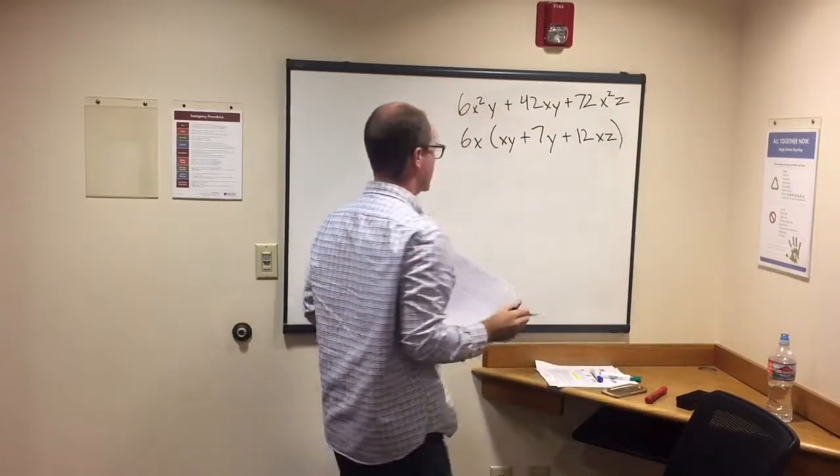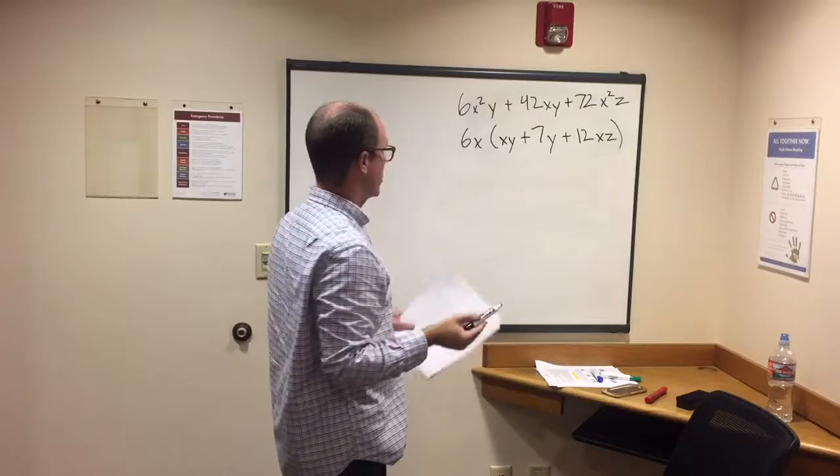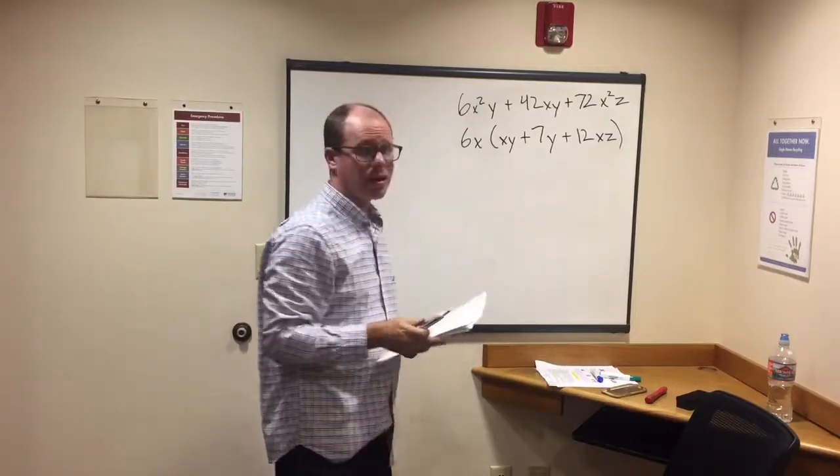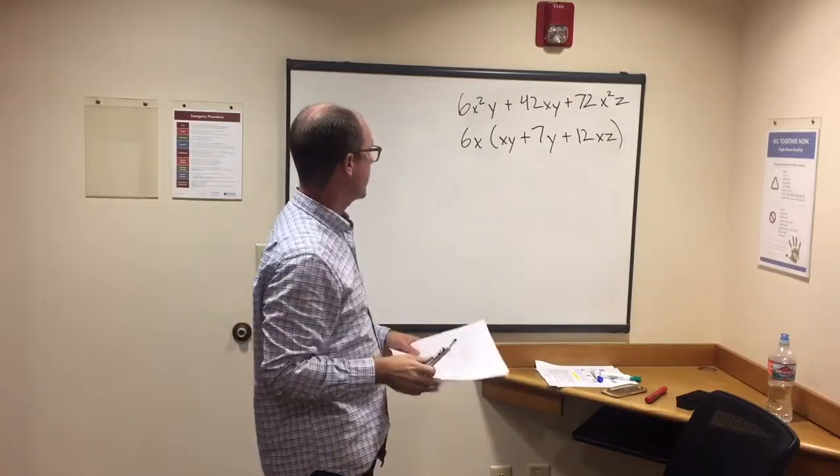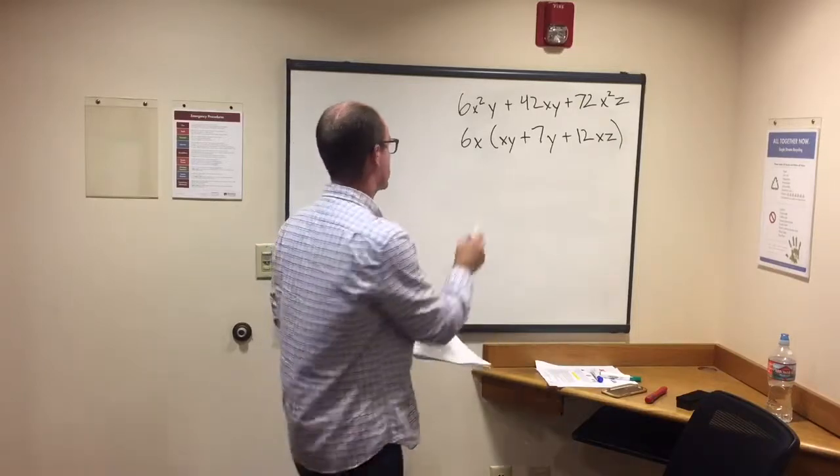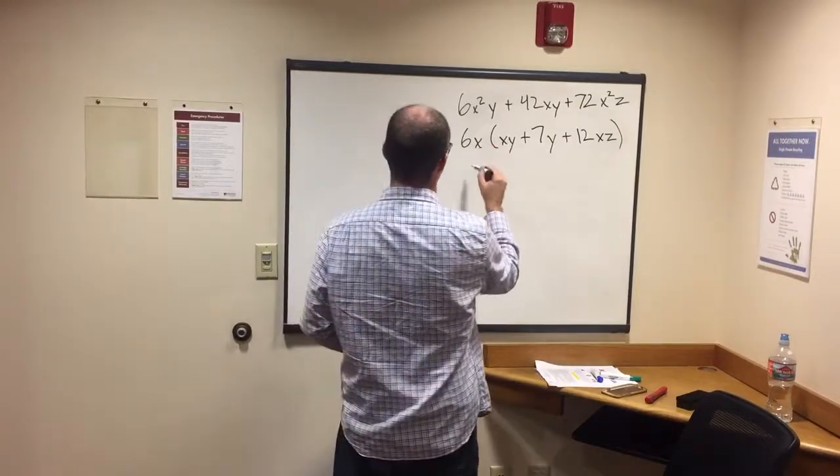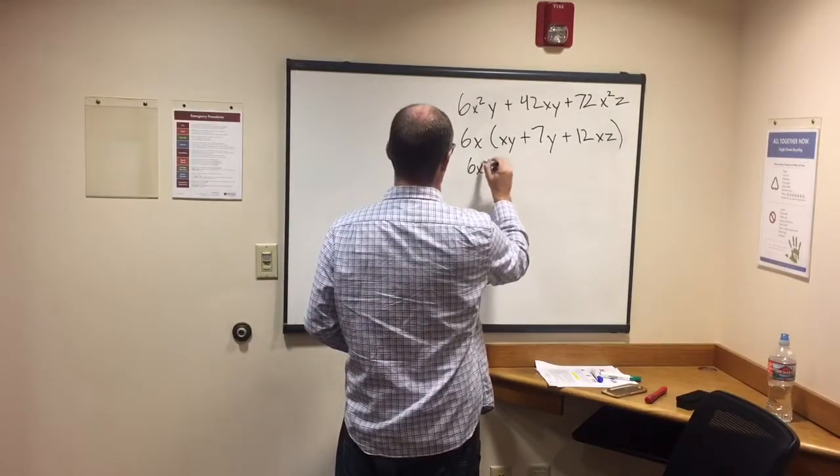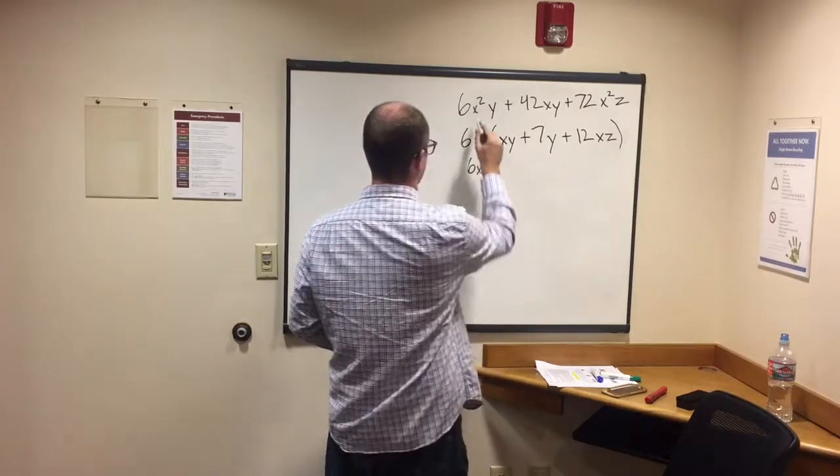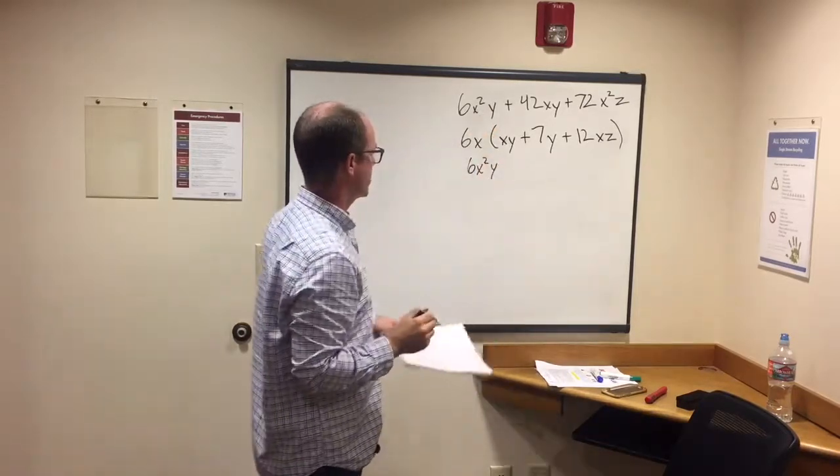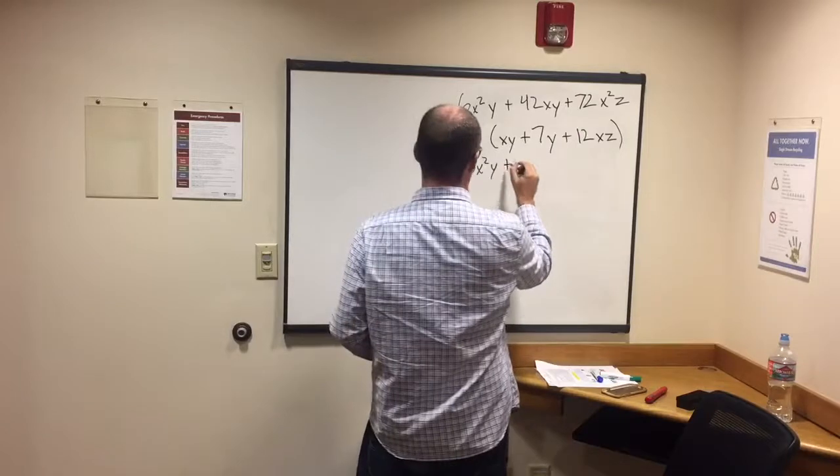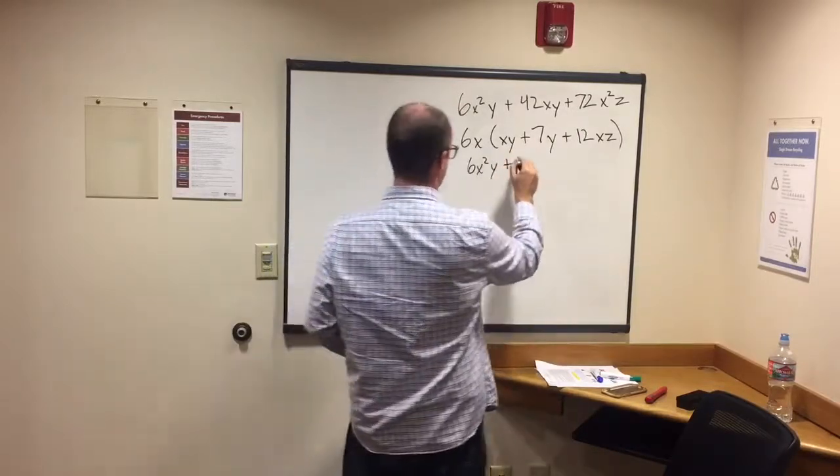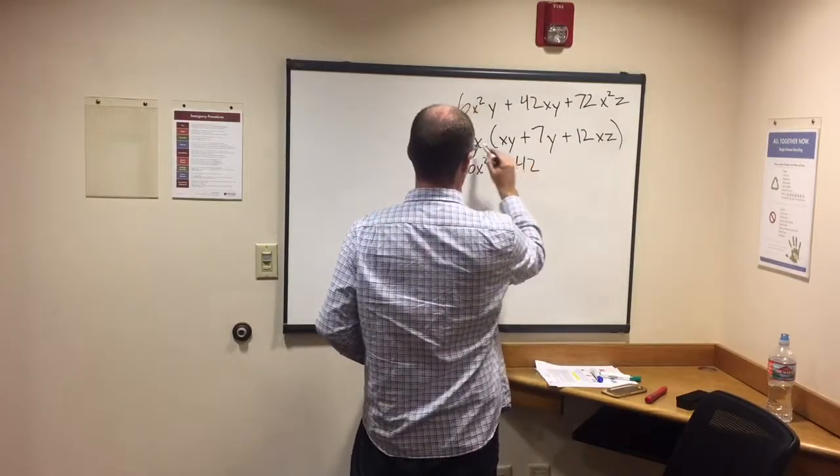'Man, I don't know if I did it right or not,' go ahead and multiply it all out and see if you got the right answer. So 6x times xy equals 6x squared y - that's what we have up here, that looks good. Plus 6 times 7 is 42xy